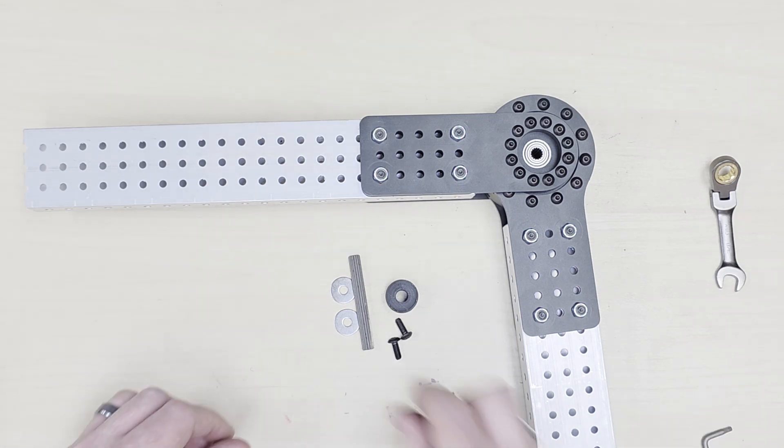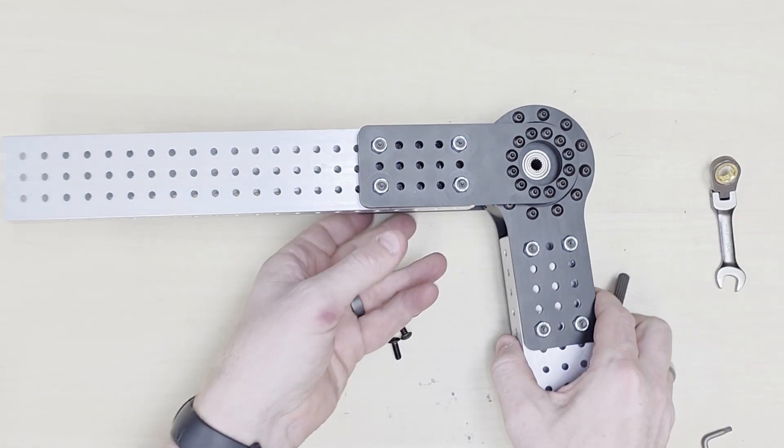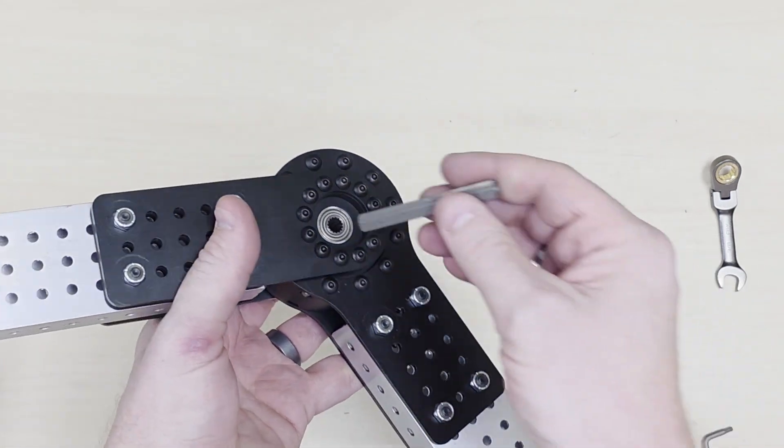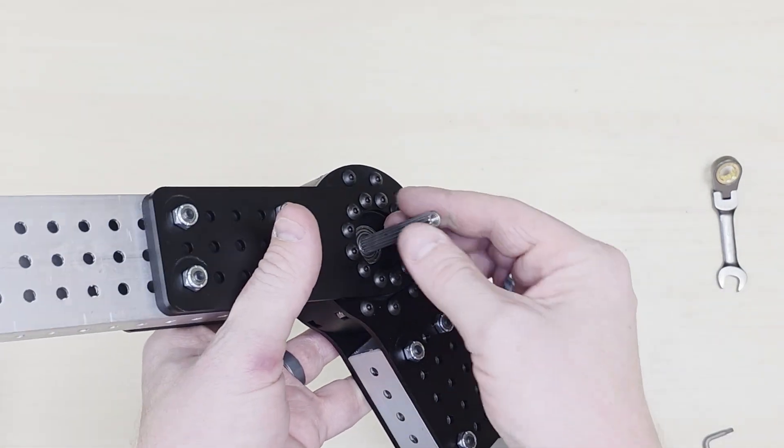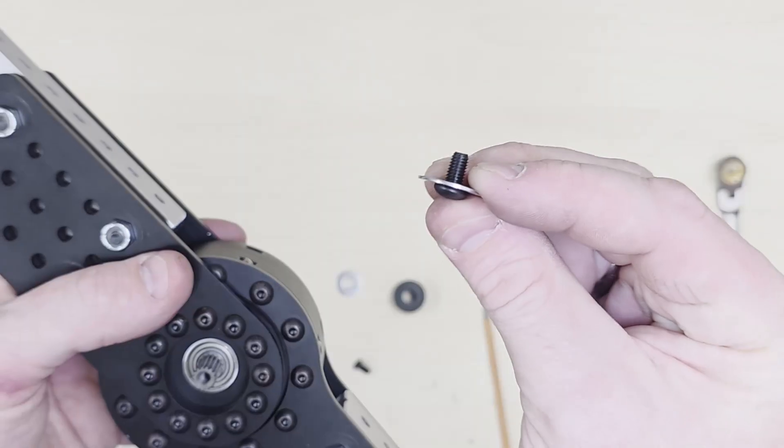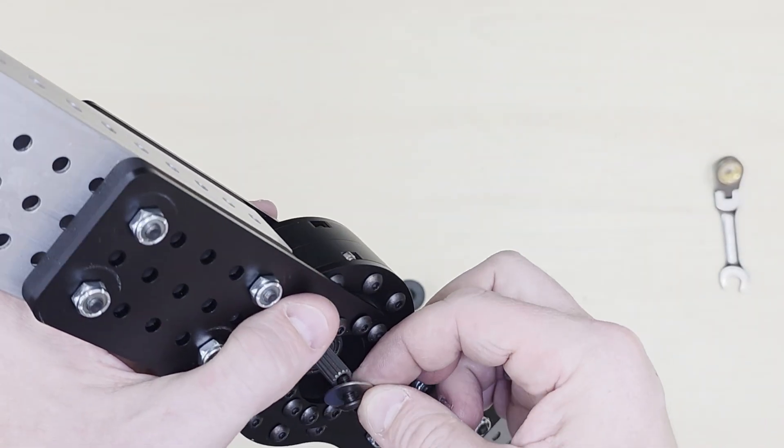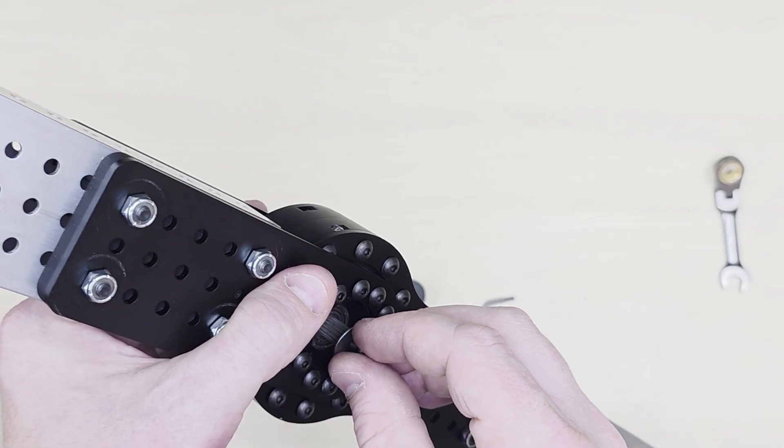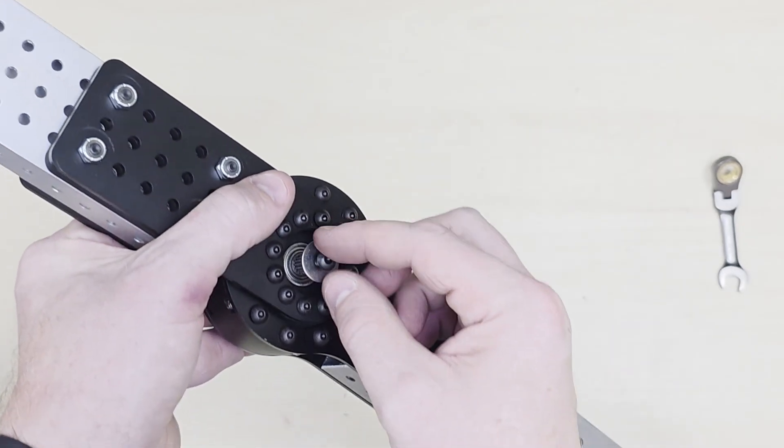Coming up on the last steps here, we have a 2.5-inch stub spline shaft. Insert that into the gearbox—that's how we're going to power the joint. Take the 10-32 3/8-inch long button head and a washer and insert that in on one side.